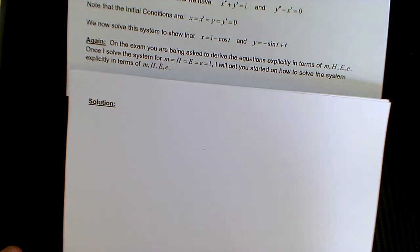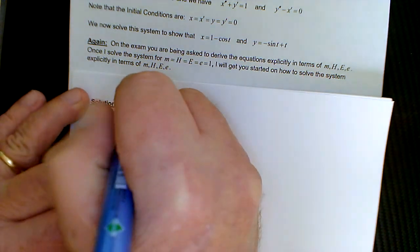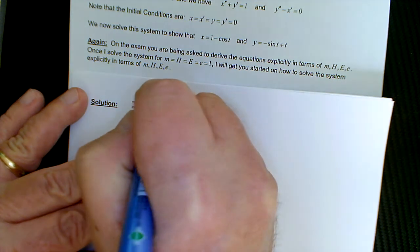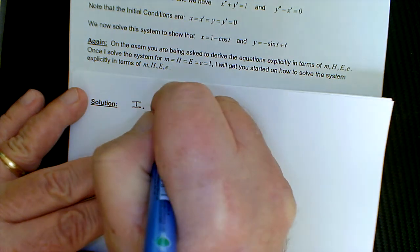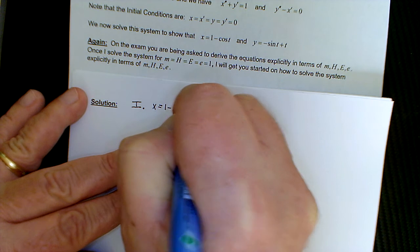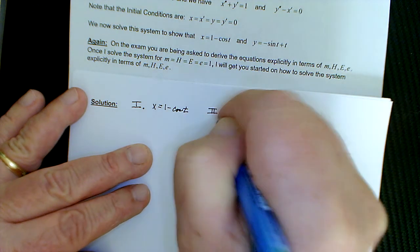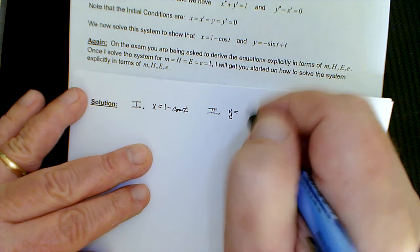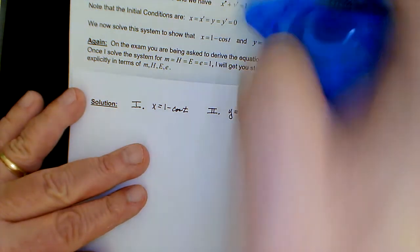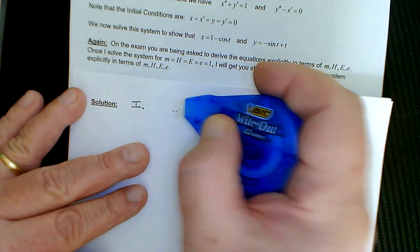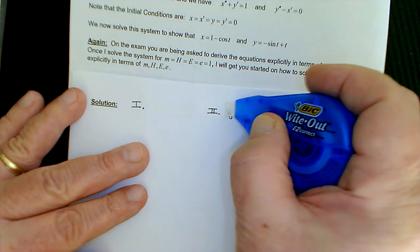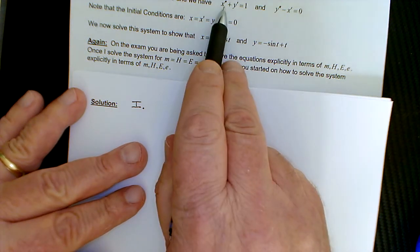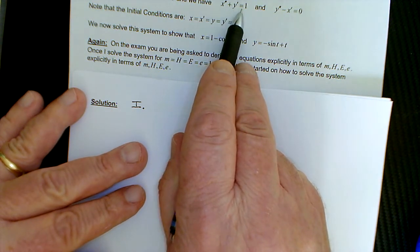So I'm going to start by first just saying that the first equation I'm going to label as Roman numeral 1. And that's going to be... I'm sorry, I meant to start with the originals, not the solutions.